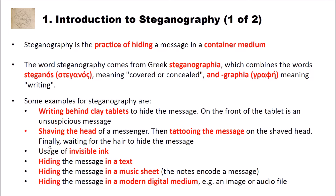The next example is the usage of invisible ink. With invisible ink, you write on paper with a liquid that is invisible when dry, then use a candle to heat the paper and the writing becomes visible again. Another example is hiding the message in a text, which is what we want to do in this video. You could use the first or second letter of words, where those letters form your hidden message, and you construct a cover message around them.